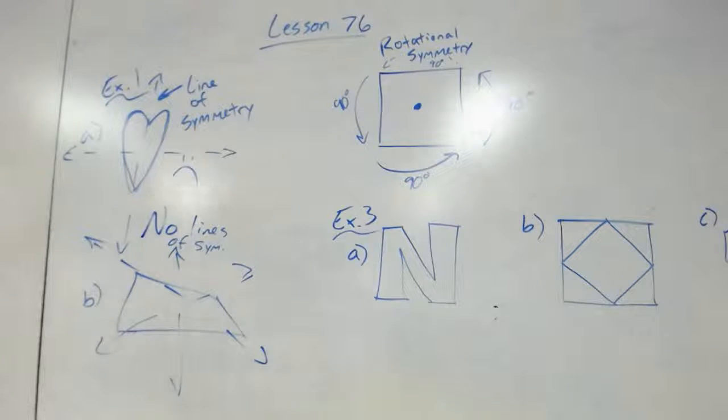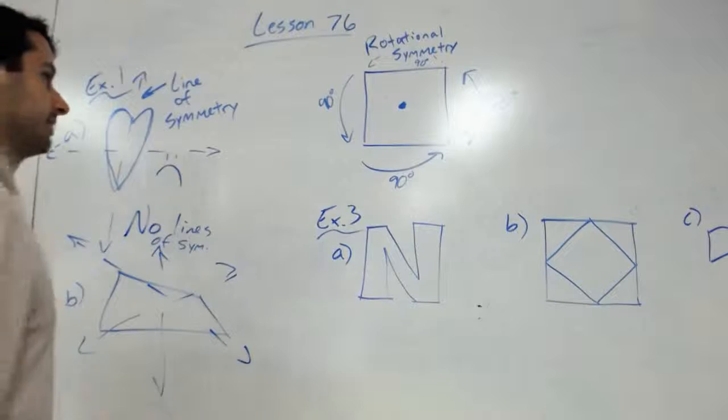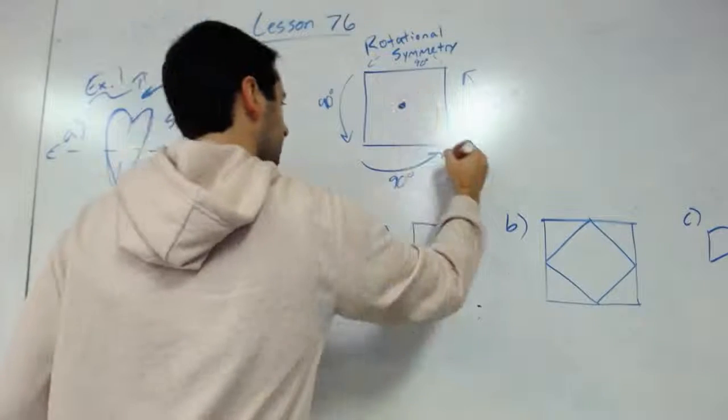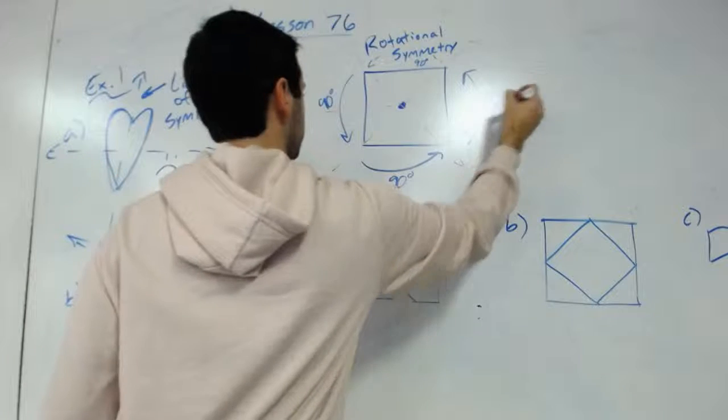So that's lines of symmetry. We can even look at a square. A square actually has multiple lines of symmetry. I have one here, there's one, two, three, four.